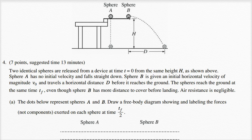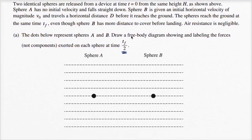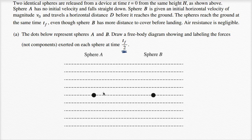Sphere A goes straight down. In the vertical direction, Sphere B will be accelerated in just the same way as Sphere A, but it has some horizontal velocity, and that makes it move out and hit the ground d to the right. When it hits the ground, that's t sub f. Right when they're released, it's t equals zero, and then at t equals t sub f — they ask for the free body diagram at t sub f over two.